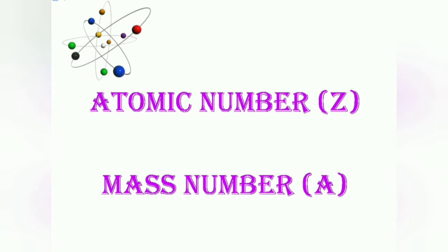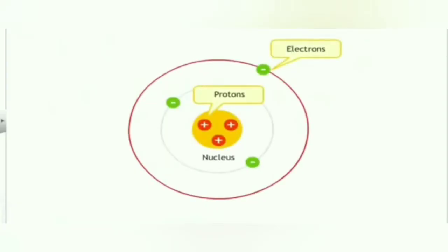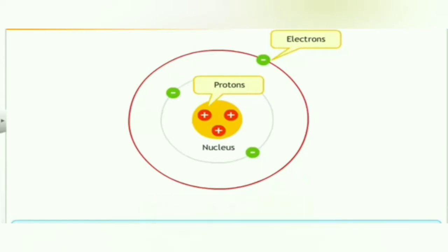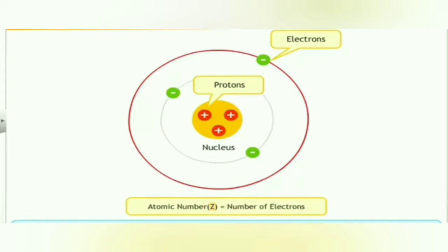Every atom of an element has a fixed number of protons in its nucleus. This fixed number of protons is referred to as its atomic number. As no two different elements can have the same number of protons, no two different elements can have the same atomic number. The atomic number is represented by the letter Z. Moreover, the number of electrons in an atom is also equal to its atomic number, because an atom contains the same number of electrons and protons.